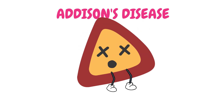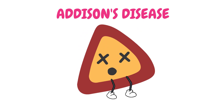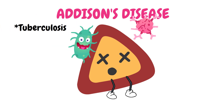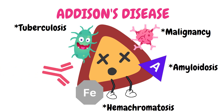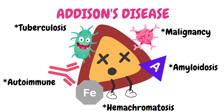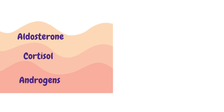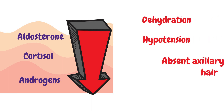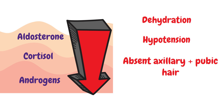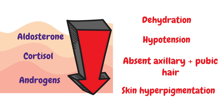Addison's disease is a condition where your adrenals are damaged. This can happen due to destruction of your adrenal gland by infections like TB, infiltrations by malignancies, amyloidosis, and hemochromatosis, or by your own immune system destroying the gland — called autoimmune Addison's disease. This leads to a significant reduction in all adrenal hormones, causing dehydration, hypotension, absence of axillary and pubic hair in females, and skin hyperpigmentation.